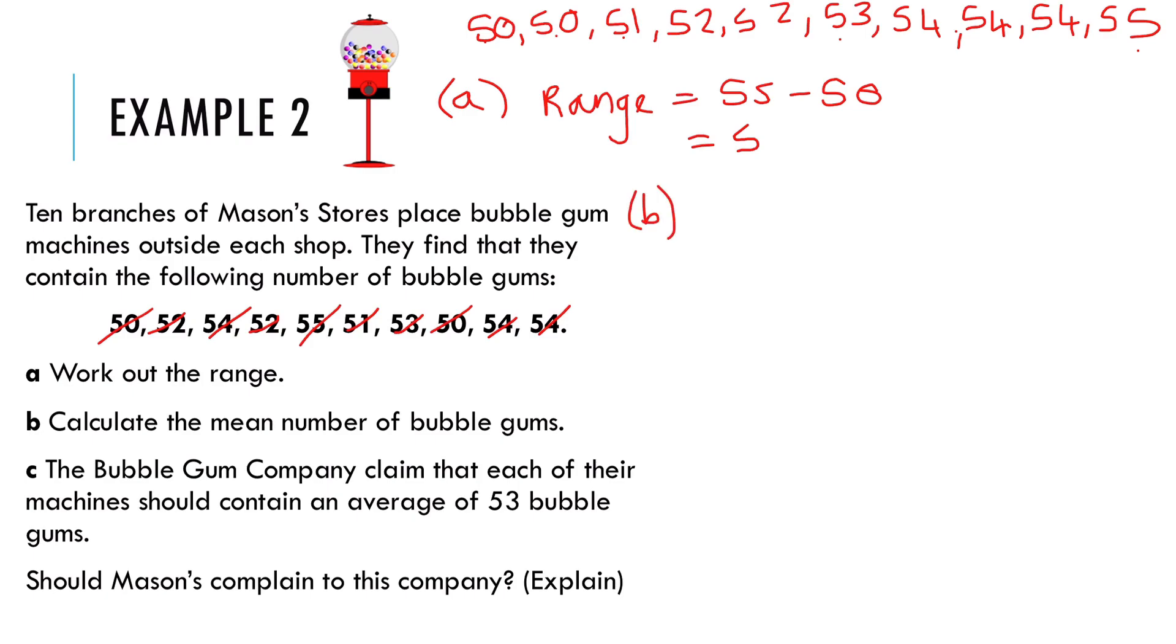Part B says work out the mean. So in order to do this, I'm going to use my calculator to add all of these numbers together. So when I add them all together, just adding them all up, I should get 525. So to calculate the mean, I must take the number 525 that I've just found from adding everything together and divide by the number of numbers that are 10, which gives me a mean of 52.5.